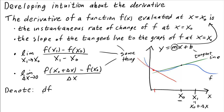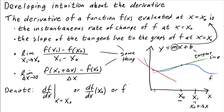We can denote the derivative in different ways. One is to write df/dx evaluated at x equals x0. Or we might write df/dx with the argument x0 in parentheses. Or we could use a completely different notation and call it f prime of x0. These three notations are all the same thing — they all mean the derivative of f evaluated at the point x equals x0, which is the slope of the tangent line there.